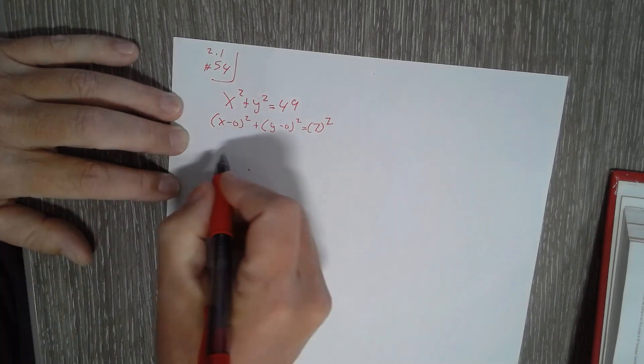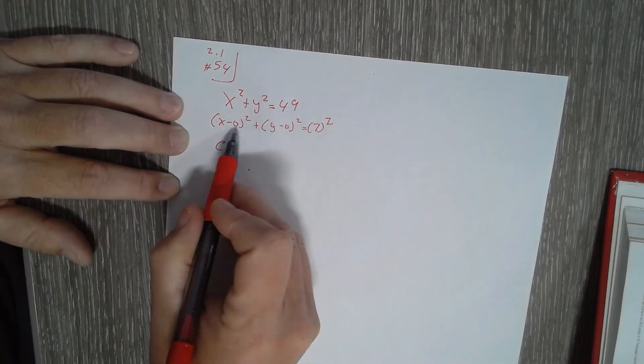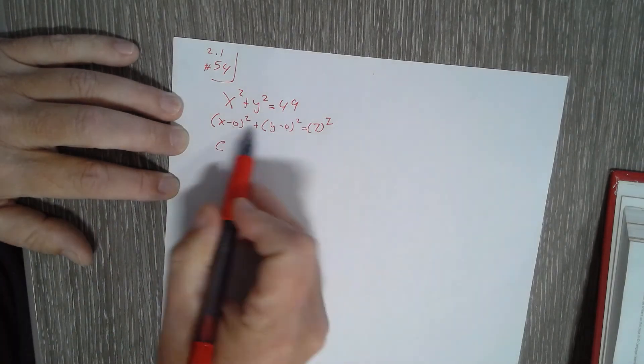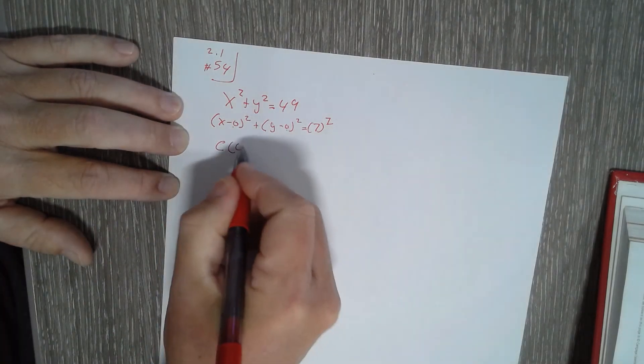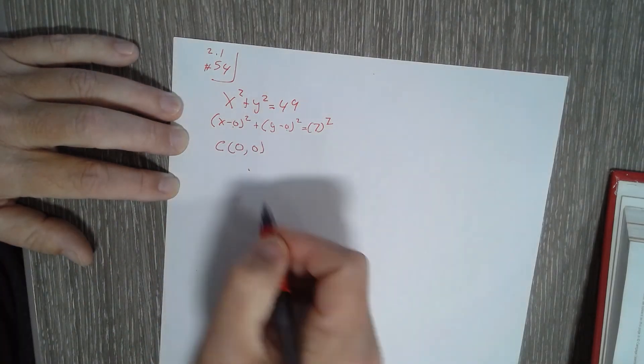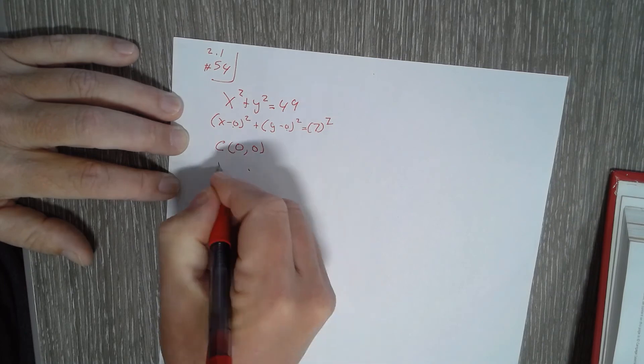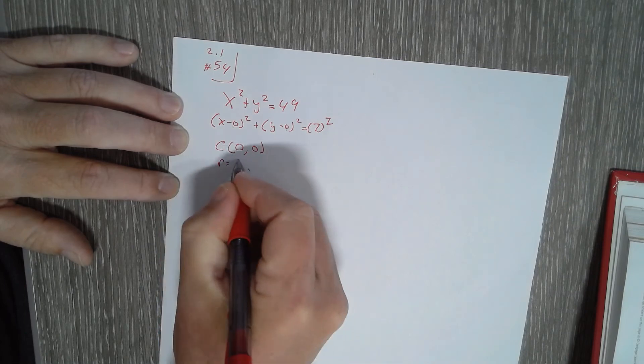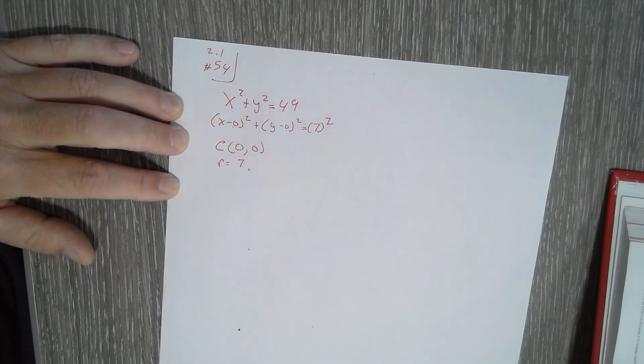So therefore the center — remember it's always the opposite of those coordinates — is at (0, 0), and the radius is 7.